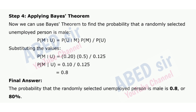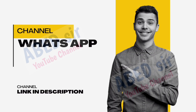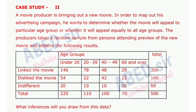Final answer: The probability that the randomly selected unemployed person is male is 0.8 or 80%. Next important case study is Case Study 2. A movie producer is bringing out a new movie. In order to map out his advertising campaign, he wants to determine whether the movie will appeal to a particular age group or whether it will appeal equally to all age groups. The producer takes a random sample from persons attending a preview of the new movie and obtains the following results. What inferences will you draw from this data?